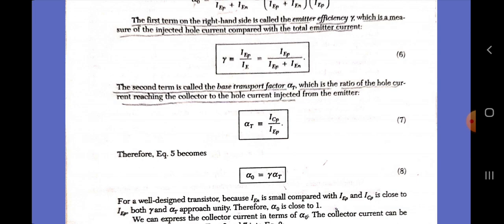We can express the collector current in terms of alpha_0: I_C = I_CP + I_CN = alpha_0 × I_E + I_CN, where I_CN corresponds to the collector-base current flowing with the emitter open circuit (I_E = 0). We designate I_CN as I_CBO, where the first two subscripts refer to the two terminals between which the current is measured and the third subscript refers to the state of the third terminal with respect to the second. I_CBO designates the leakage current between the collector and the base with the emitter open. The collector current for the common-base configuration is given by I_C = alpha_0 × I_E + I_CBO.